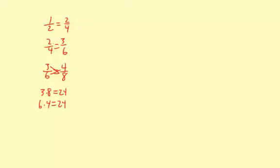So 3 times 8 equals 6 times 4. All these cross-products are the same. 2 times 6 equals 4 times 3. 1 times 4 equals 2 times 2. So that's a good way to solve proportions, but it's just another way to illustrate the relationship.